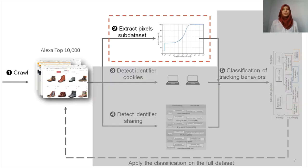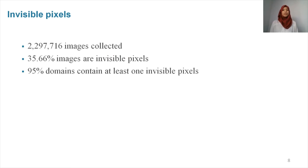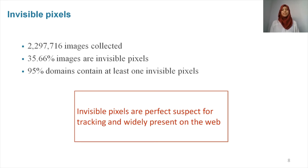As a result of our crawl, we collected cookies, HTTP request responses, and the images included in the websites. We analyzed these images, extracted those that are invisible pixels, and grouped the request responses leading to these invisible pixels into a sub-dataset that we refer to as the pixels sub-dataset. We collected over 2 million images, and by analyzing them, we found that more than 35% of these images are invisible pixels. In summary, 95% of the domains we visited contain at least one invisible pixel. To sum up, invisible pixels are a perfect suspect for tracking, and they are also widely present on the web.